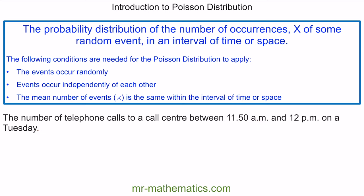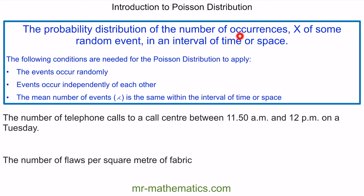Another example: the number of flaws per square meter of fabric. The number of occurrences would be the number of flaws. The interval of time or space would be per square meter of fabric. It would be random and independent of each other, and you would expect the mean number of events to be the same within any square meter of fabric. These are the conditions for a Poisson distribution.